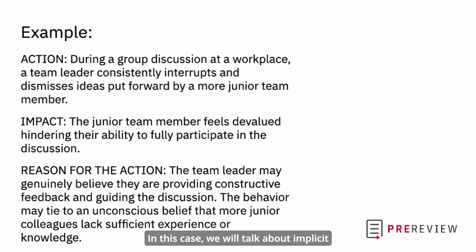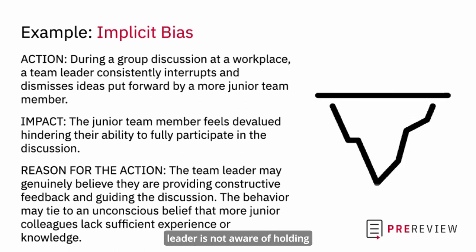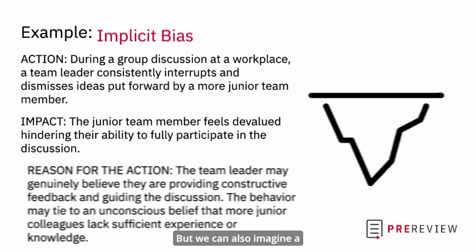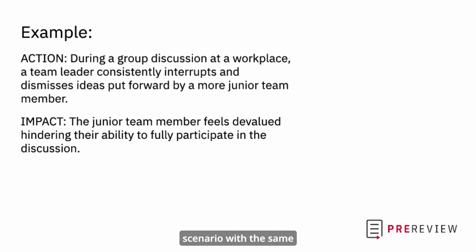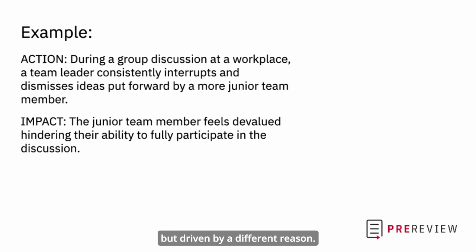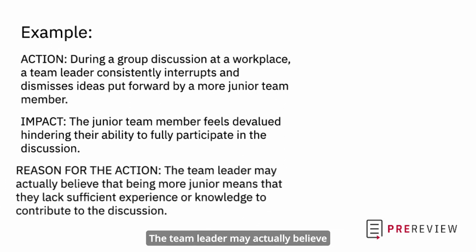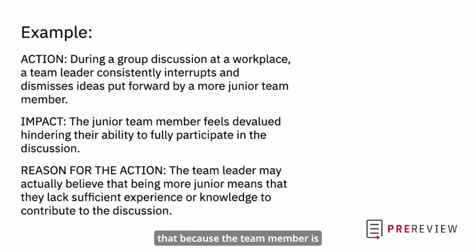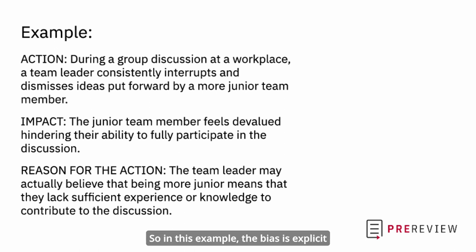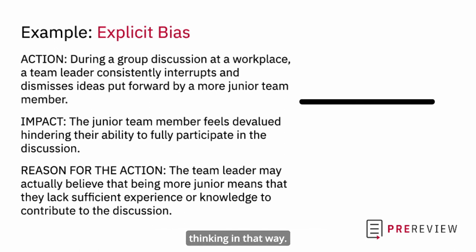In this case, we would talk about implicit bias because the team leader is not aware of holding this belief. But we can also imagine a scenario with the same action and the same impact but driven by a different reason — where the team leader actually believes that because the team member is more junior, they lack sufficient experience or knowledge to contribute. In that example, the bias is explicit because the team leader is aware of thinking in that way.